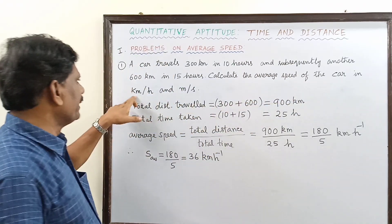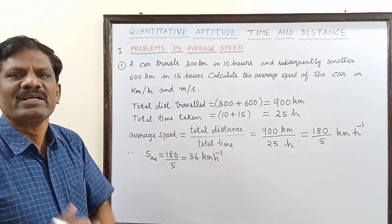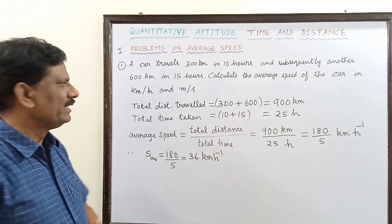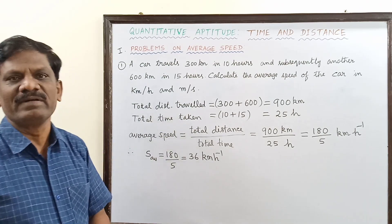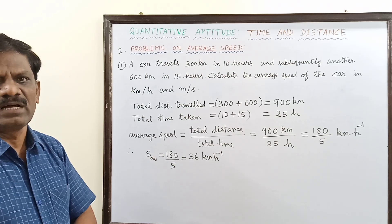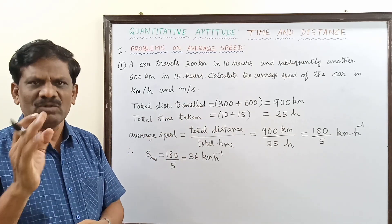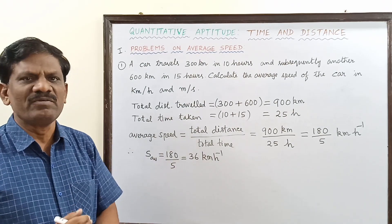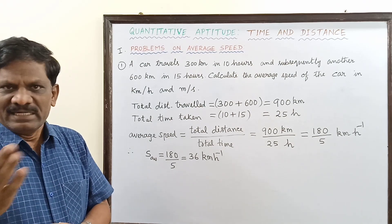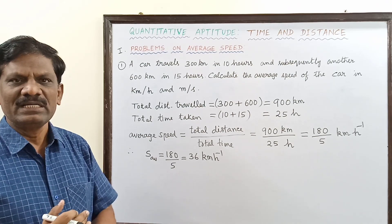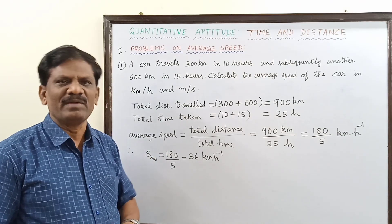So we can calculate the average speed of the car in kilometer per hour as well as meter per second. The SI unit is meter per second, but the commonly used unit is kilometer per hour. If you ask any car driver or train driver about speed, they express it only in kilometer per hour. Any common man also cannot understand how fast or slow a vehicle is if you express it in meter per second — only kilometer per hour gives the appropriate idea of speed.